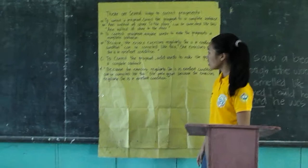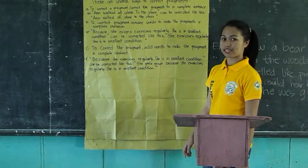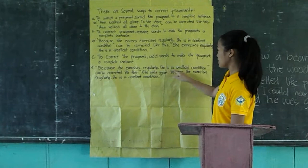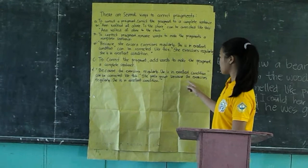Letter C: correct fragments by adding words to make the fragment a complete sentence. Example: 'Because she exercised regularly, she's in excellent condition' can be corrected like this — 'She feels great because she exercised regularly, she's in excellent condition.'